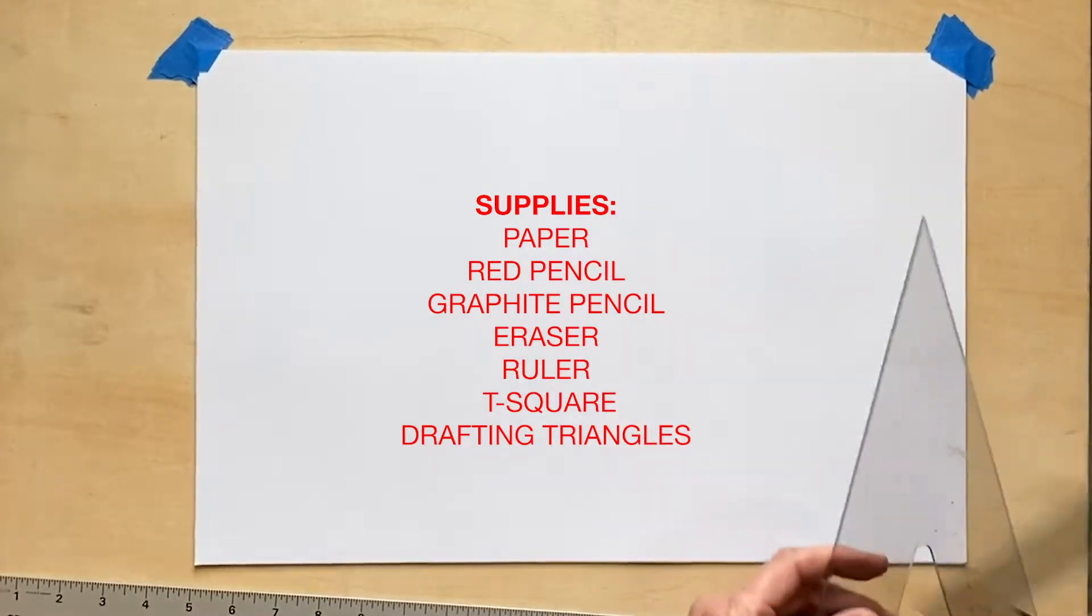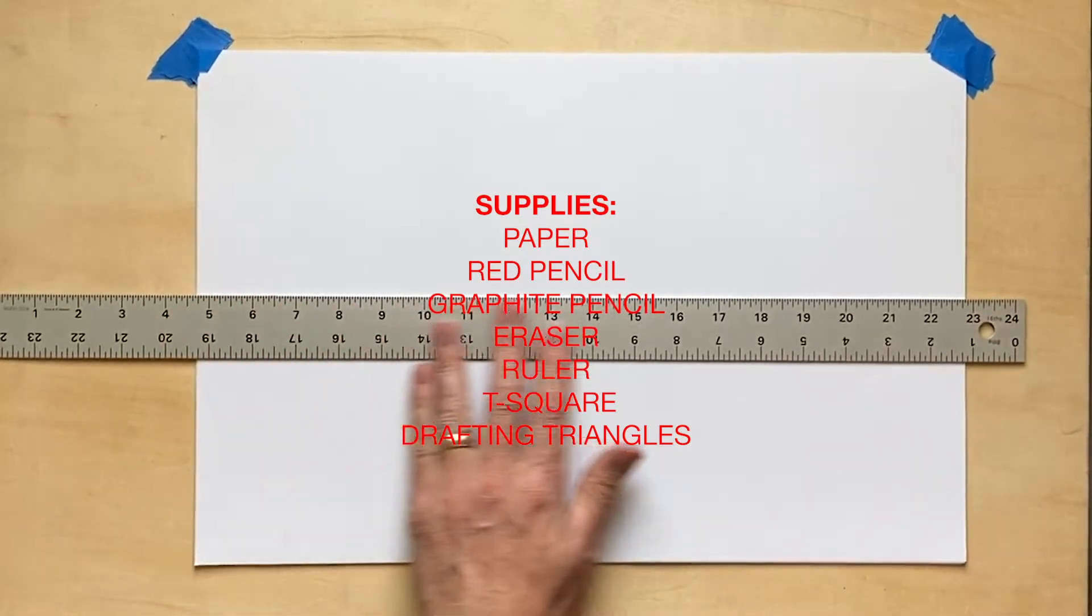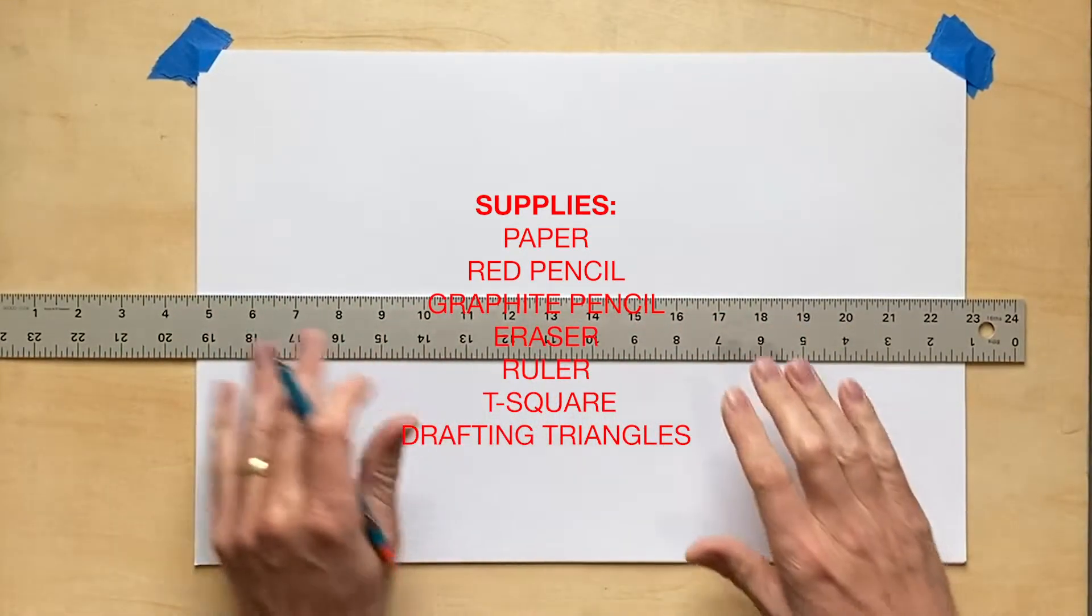You'll need a few supplies: paper, red pencil, graphite pencil, eraser, straight edge like a ruler or T-square, and drafting triangles.